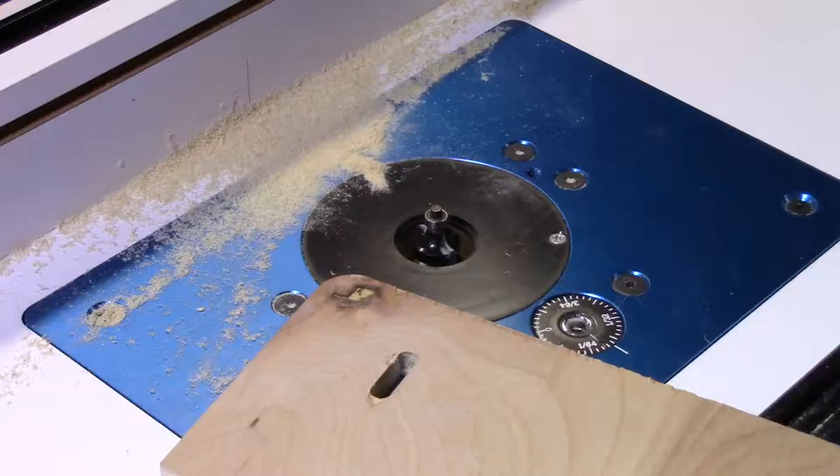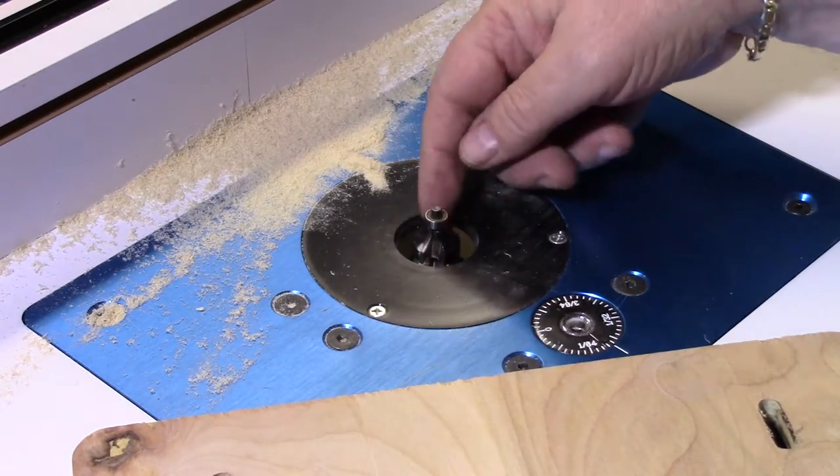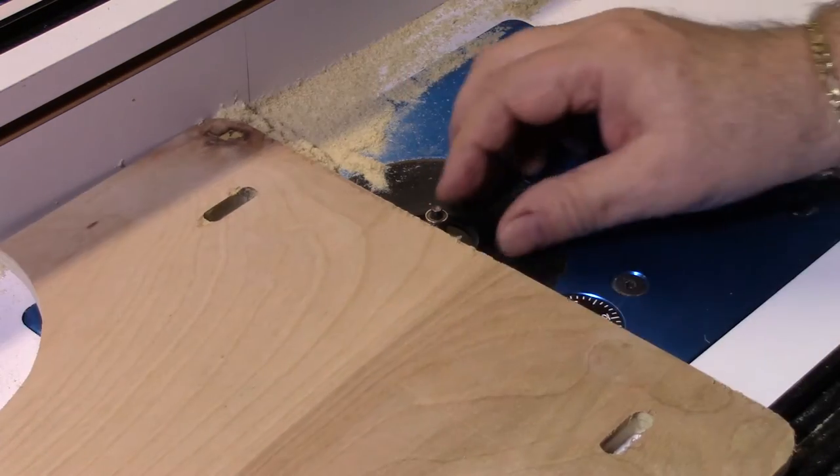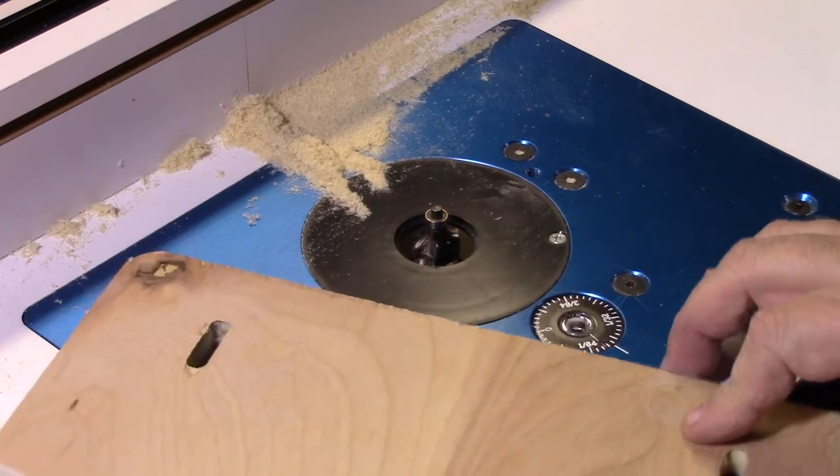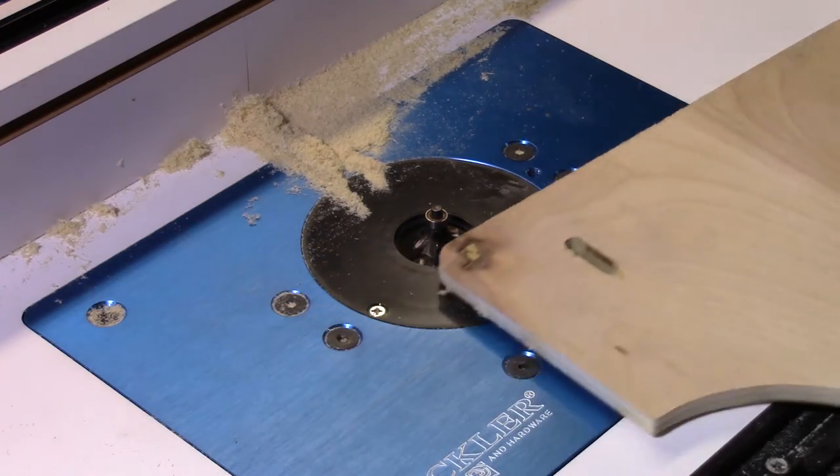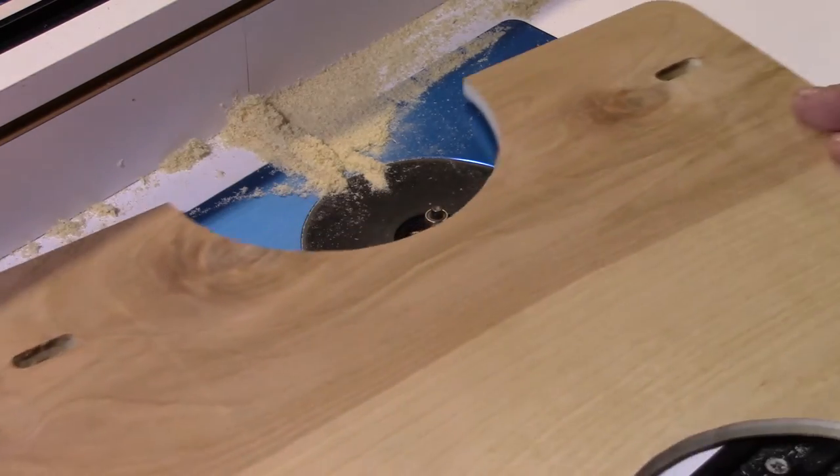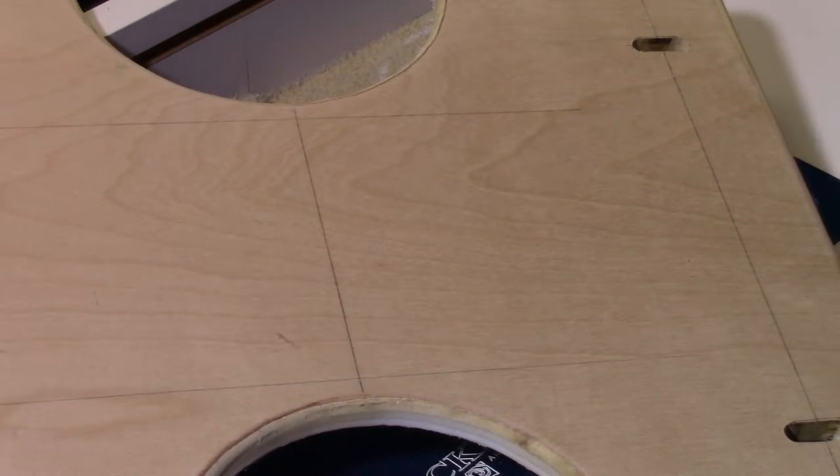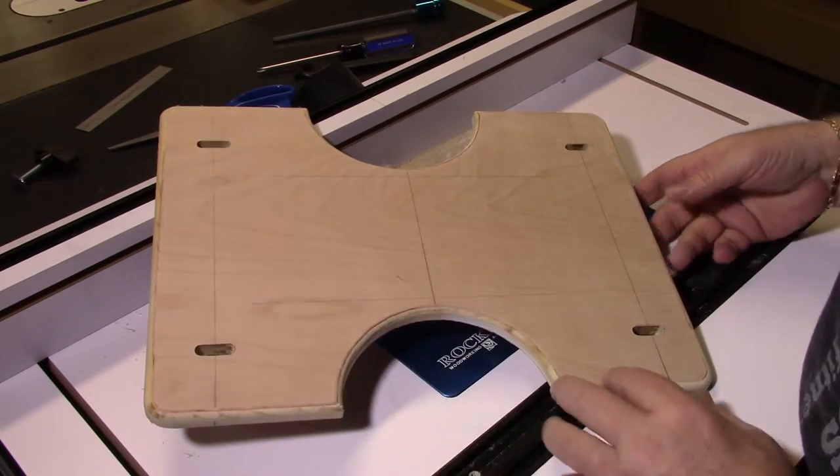So I put in a quarter inch round over bit here into the router table and got the height adjusted so that the edge of my workpiece just barely kissed the edge of the bit blade. And turned it on and went around in this direction and rounded over the edges and have this result. Nice, rounded over edges all the way around.